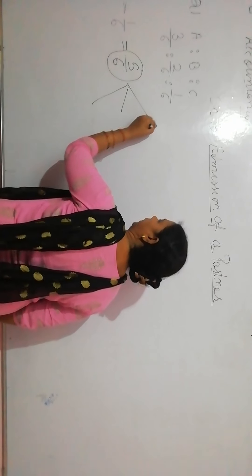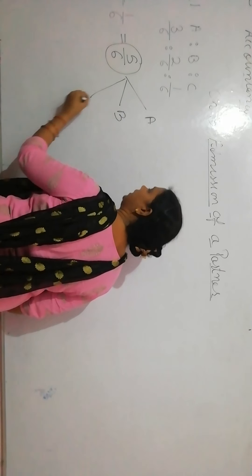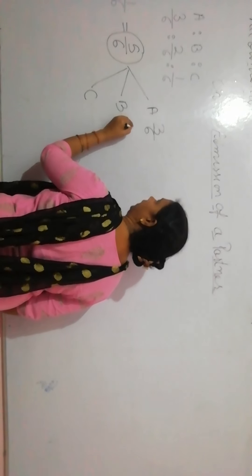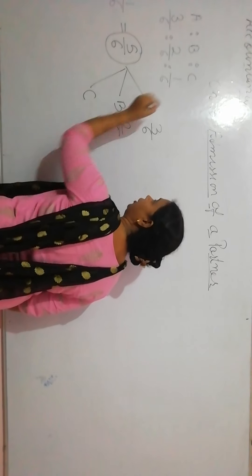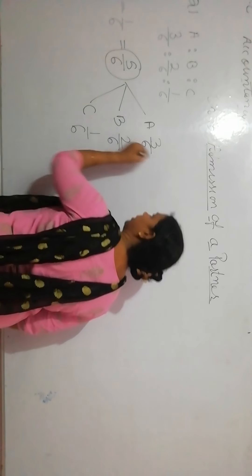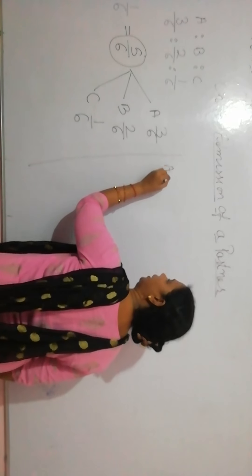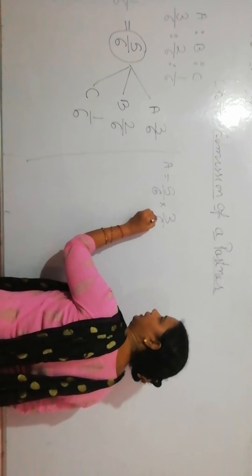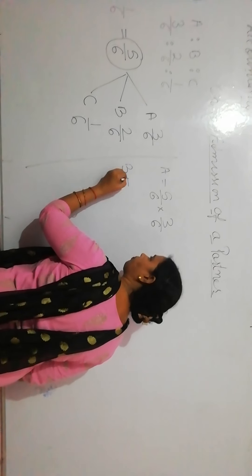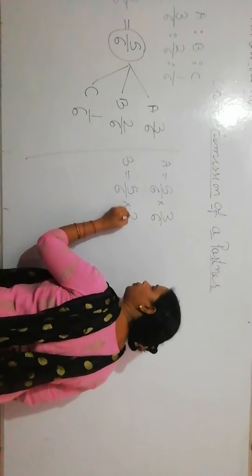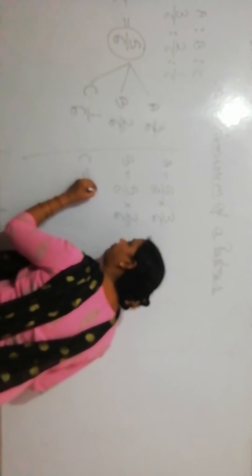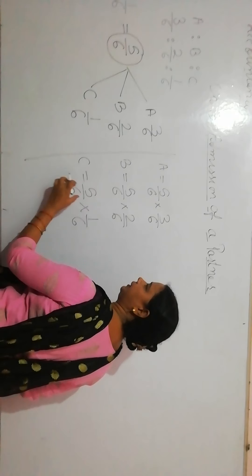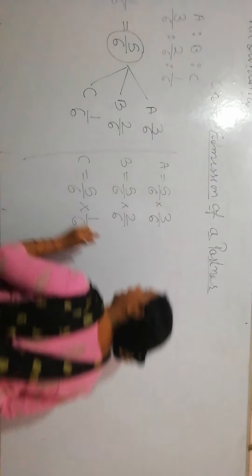It means that the profit is given by three partners. A will give it, that means 3 by 6. B will give it, so 2 by 6. And C will give it, 1 by 6. Clear? This means A ratio will be 5 by 6, 3 by 6 A. B, 5 by 6, 2 by 6. C, 5 by 6, 1 by 6. This is 5 by 6. This is the profit of D admission.